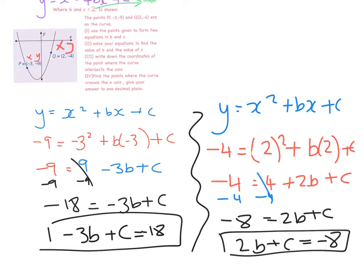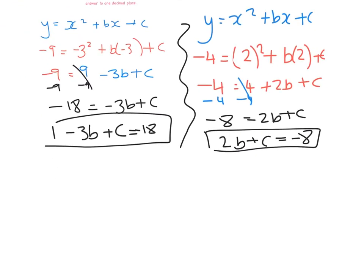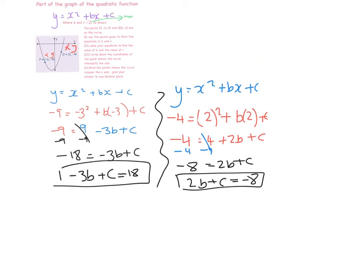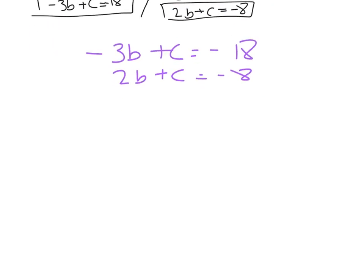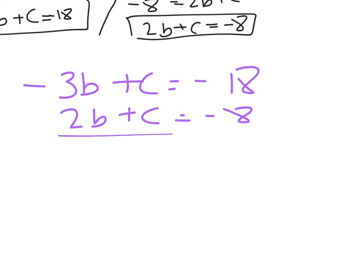In equation one I don't know b and I don't know c, and in equation two I don't know b and I don't know c. Whenever we have equations where we don't know two things, the next part of the question says solve — hopefully you're saying the word with me now: it is simultaneous equations. So: minus 3b plus c equals minus 18 is equation one, and 2b plus c equals minus 8 is equation two.